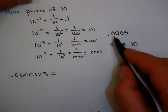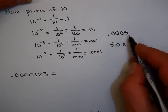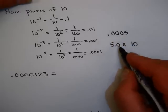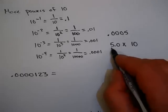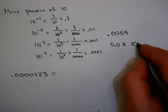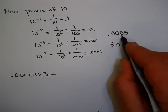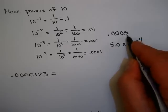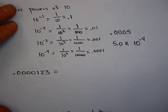So how do I take 0.0005, that number written in decimal notation, and write it in scientific notation? I need one non-zero number in front of the decimal point, so I'd move the decimal point over so it's right after the 5, giving me 5.0. But 5.0 is much larger than 0.0005, so I'm going to have to multiply by a negative power of 10 — dividing by 10 a total of 1, 2, 3, 4 times. So this is 5.0 times 10 to the minus 4.